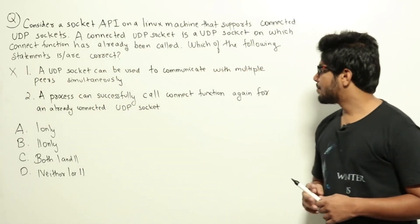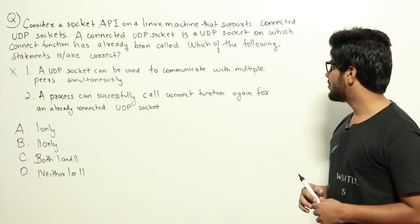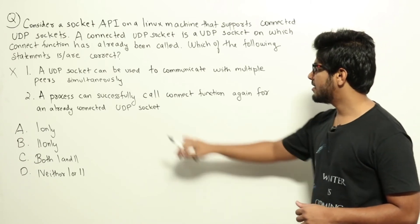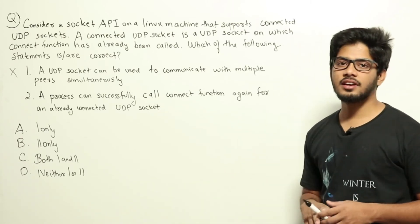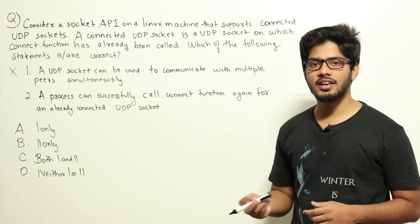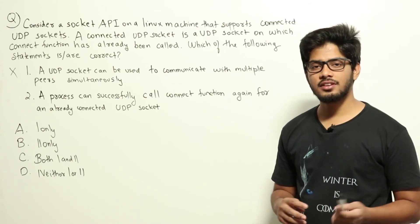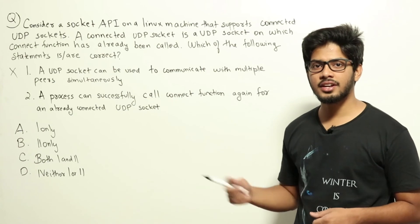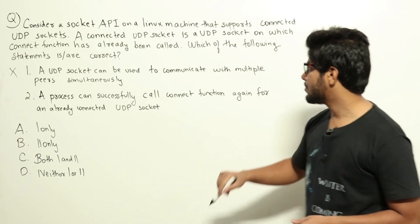Second, a process can successfully call connect function again for an already connected UDP socket. This statement is correct. We can call connect function again on a connected UDP socket to change the peer and use it to connect to a new peer. So this statement is correct.